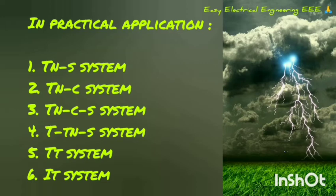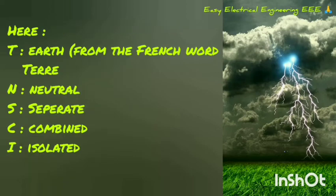The alphabets used here are as follows: T denotes earth, which comes from the French word 'terre'. N is neutral. S is separate. C is combined. I is isolated.